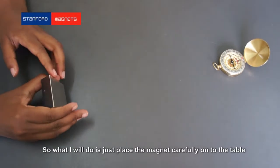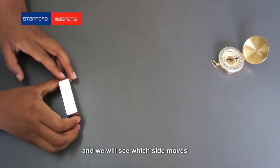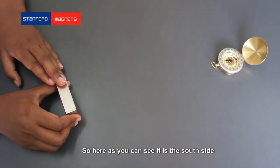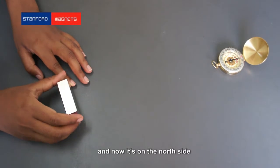So what I will do is just place the magnet carefully onto the table and I will see which side moves. So here as you can see it's on the south side and now it's on the north side.